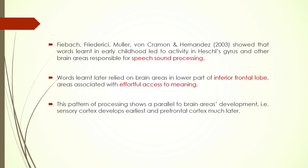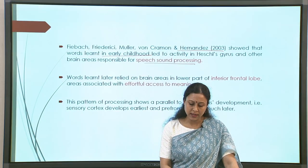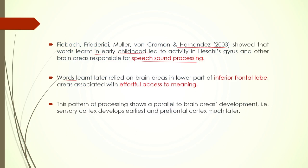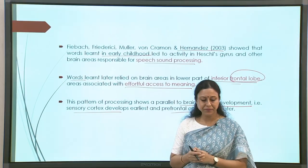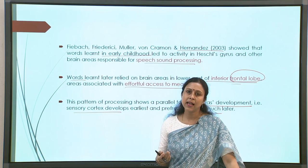Another study by Hernandez and his group showed that words learnt early in childhood led to activity in the speech sound processing area — basically the sensory motor area. Words learnt later relied more on brain areas in the inferior frontal lobe. This is crucial: frontal lobe activation means effortful access to processing. Words learnt later were processed in the frontal lobe, while words learnt earlier were processed in areas dependent on speech sound processing. This pattern shows a parallel to brain area development — sensory cortex develops earliest and prefrontal cortex develops much later.